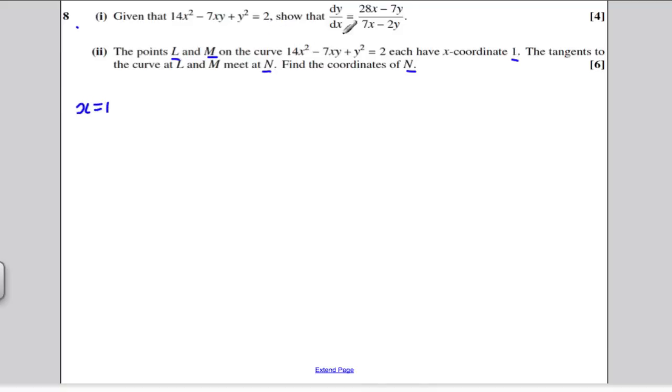substituting that into the curve, we would get 14(1)² - 7(1)y + y² = 2. Tidying that up,